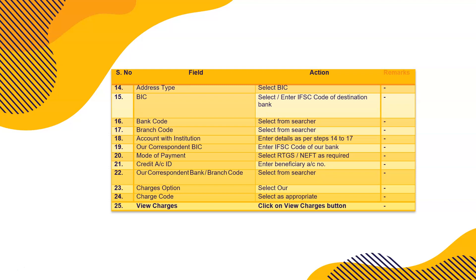Choose bank code from the searcher and branch code from the searcher — these are for the destination bank. Account with Institution (fields 14 to 17) — enter BIC again, for example SBI or HDFC. Mode of payment: select RTGS or NEFT as required. Enter the credit account number given by the applicant. Correspondent bank branch code is used for international payments; in an Indian domestic scenario this will be left blank.